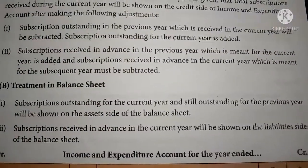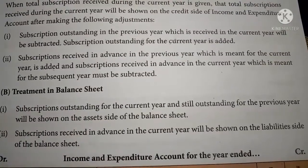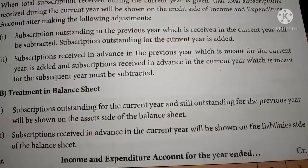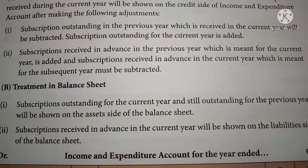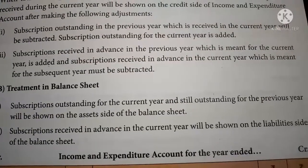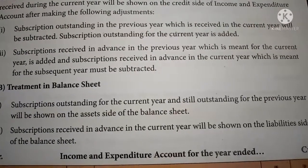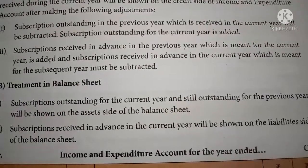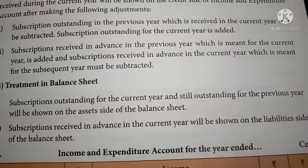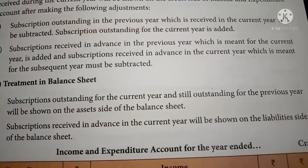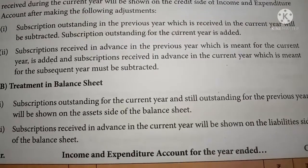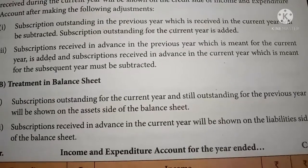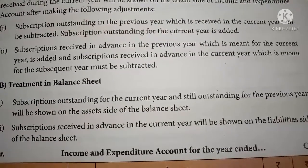From the balance sheet point of view, subscription outstanding for the current year and still outstanding from the previous year should be shown on the asset side of the balance sheet. Subscription received in advance for the current year will be shown on the liability side of the balance sheet. These are important points to note while dealing with subscription in the Income and Expenditure account.